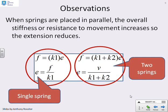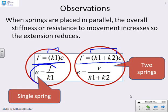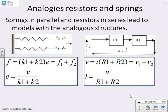Here's a summary of the results. With a single spring: F equals k1 times e. With two springs in parallel: F equals (k1 plus k2) times e. The effective stiffness k1 plus k2 is bigger than before. Looking at the effective extension: with one spring it's F over k1; with two springs it's F over (k1 plus k2), so the extension reduces.